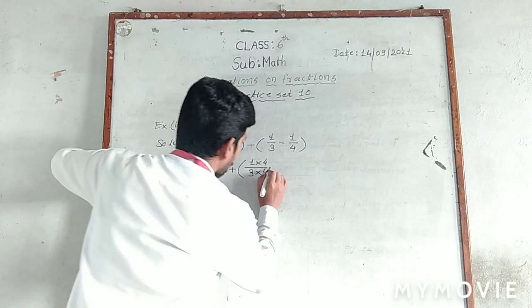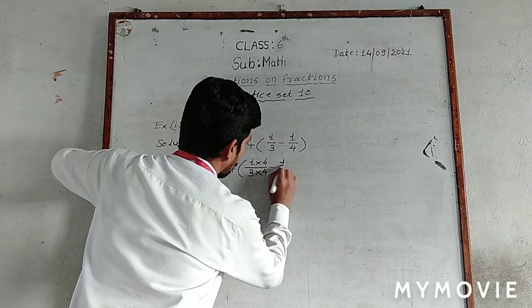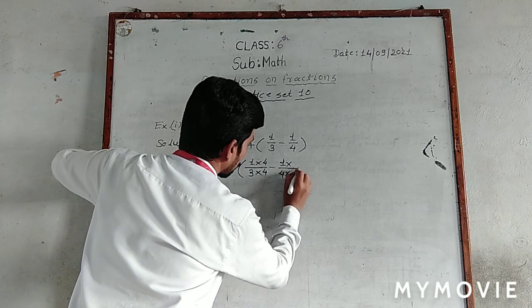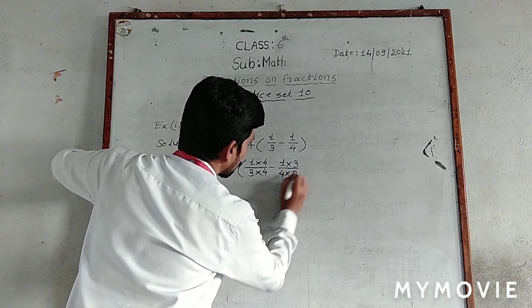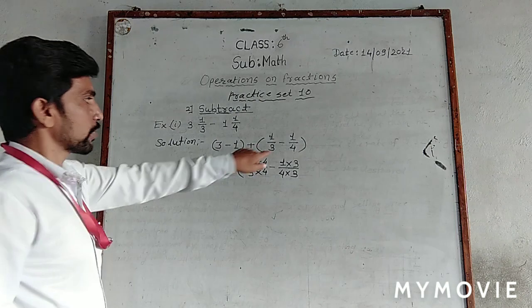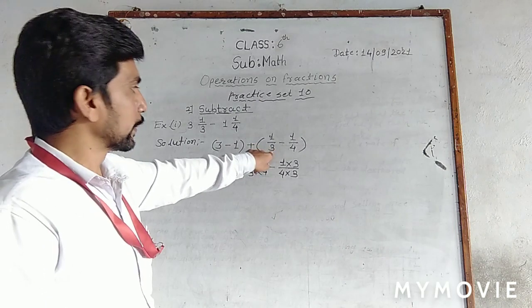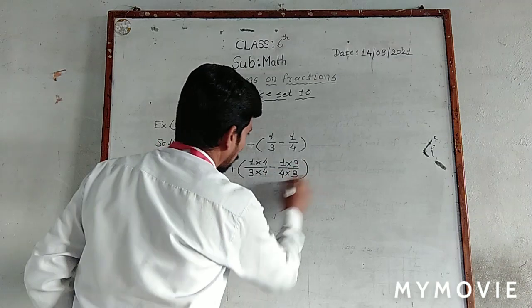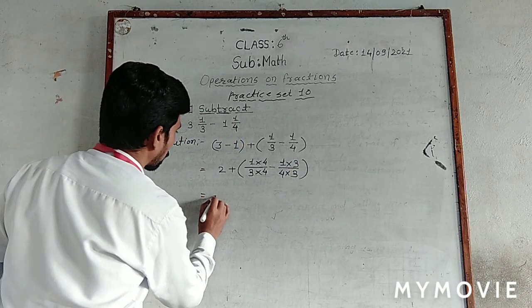Minus. For the second fraction, one upon four, we multiply both the numerator and denominator by three.